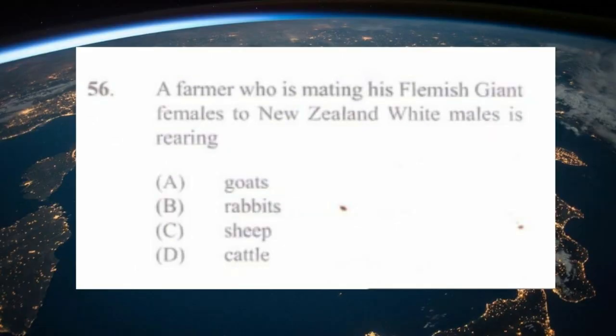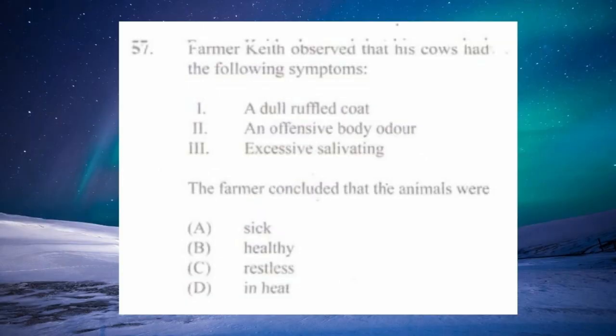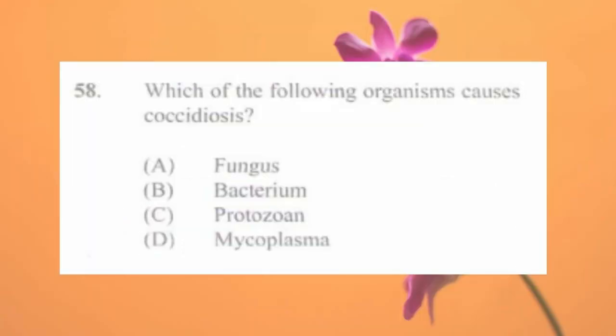Question number fifty-six: a farmer mating Flemish Giant females to New Zealand White males is rearing a) goats, b) rabbits, c) sheep, d) cattle. The answer is b) rabbits. Question number fifty-seven: farmer Keith observed the following symptoms in his animals: a dull rough coat, an offensive body odour, and excessive salivating. The farmer concluded the animals were a) sick, b) healthy, c) restless, d) in heat. The answer is a) sick.